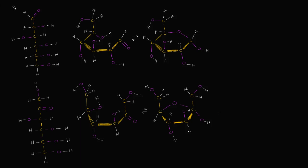We've been giving a lot of attention to our old friend glucose, the monosaccharide glucose, that is the building block of things like glycogen and starch and chitin. What I want to do in this video is give a little attention to another fairly prominent monosaccharide, and that is fructose, often known as fruit sugar. As a monosaccharide, it is actually the sweetest of all the sugars. So let's compare the two.